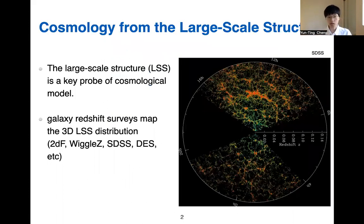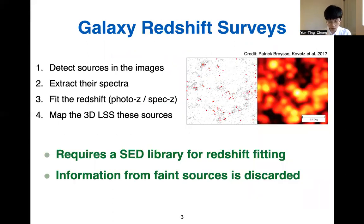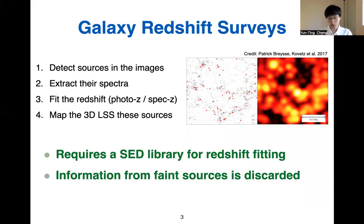One of the main goals of cosmology is to study the large-scale structures of our universe. Over the past couple of decades, people have been doing large-scale galaxy redshift surveys like the SDSS to make beautiful maps of large-scale structure traced by galaxies. We can study the clustering of these galaxies to infer the underlying cosmological model.